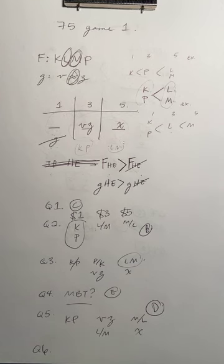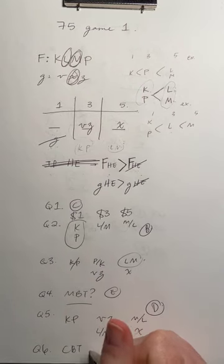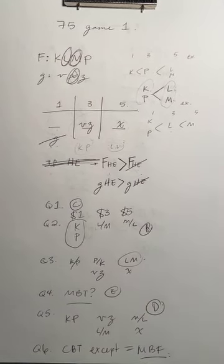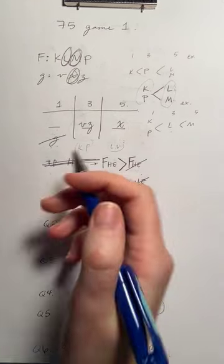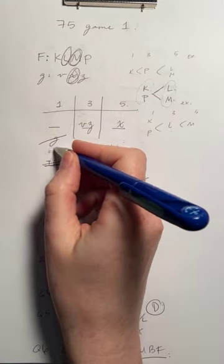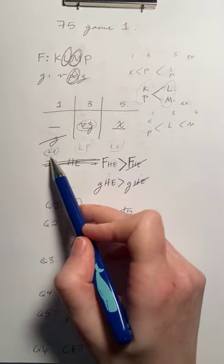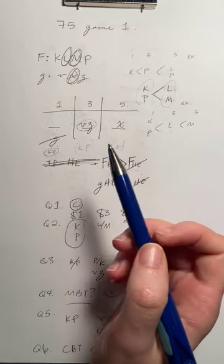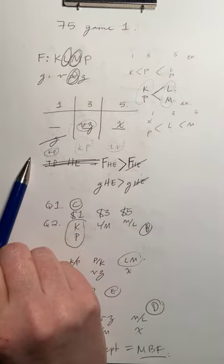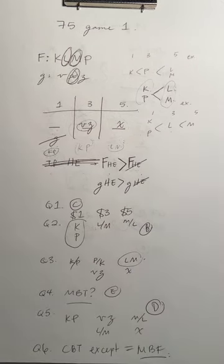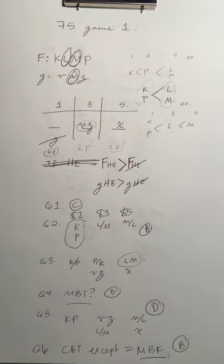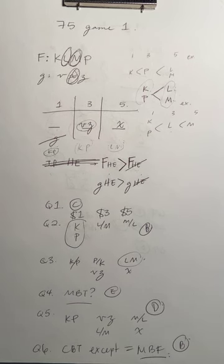Question six: could be true except means we're looking for something that must be false. The same number receive $1,000 as $3,000 — that's possible, two and two. More receive $1,000 than $3,000 — that can never happen: the highest number receiving $1,000 is two, and we already know at least two receive $3,000 (V and Z), so we can never have more in $1,000 than $3,000. B is the correct answer. I hope that's helpful — please let me know if I can give any more insight into the method for this game.